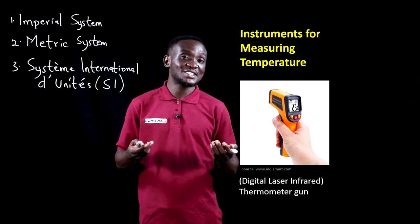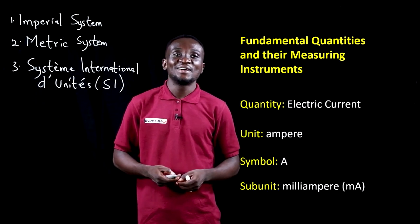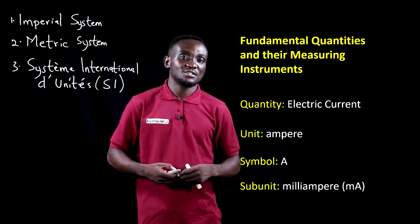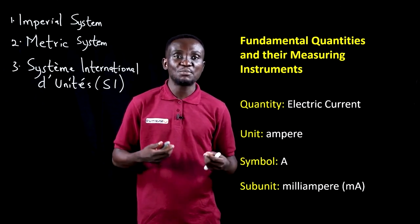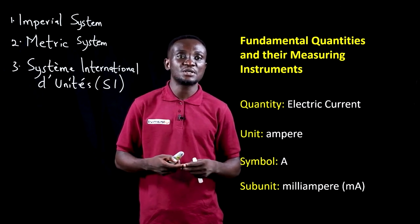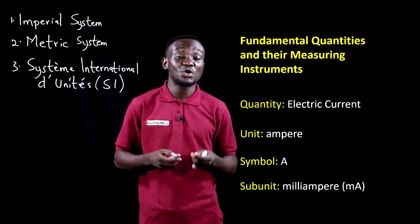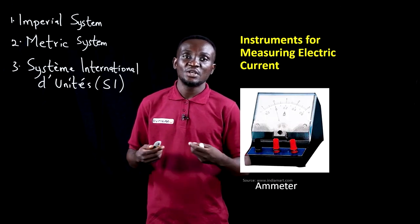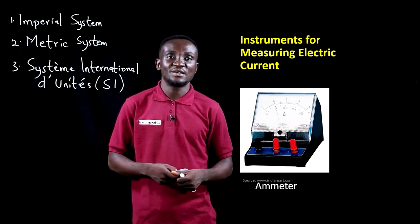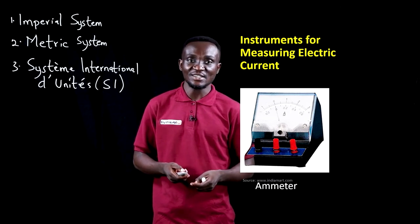When it comes to measuring electric current, the unit is the ampere, with the symbol capital A. The subunit is the milliampere, with symbol mA. The instrument for measuring electric current is the ammeter, as seen in this image.